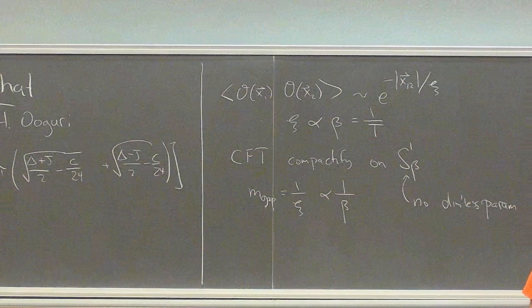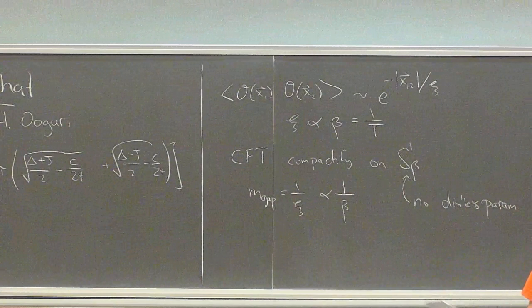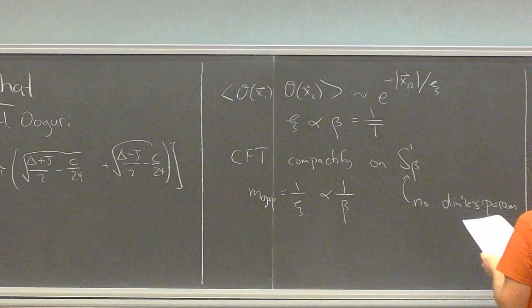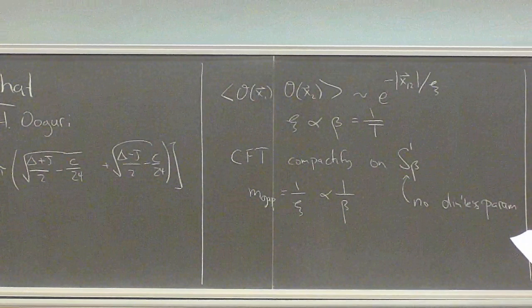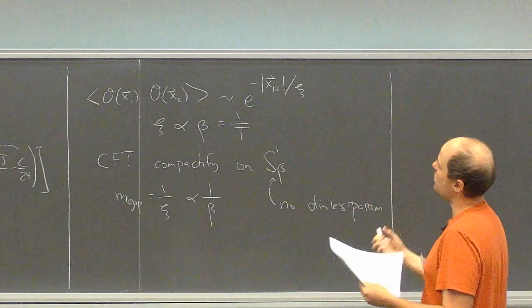This massive theory that we get when we reduce the CFT on a circle I want to call the modular dual. The difference between higher dimensions and two dimensions is that in two dimensions the modular dual is the CFT you started with, and in higher dimensions it's not. I claim this is actually a useful point of view.